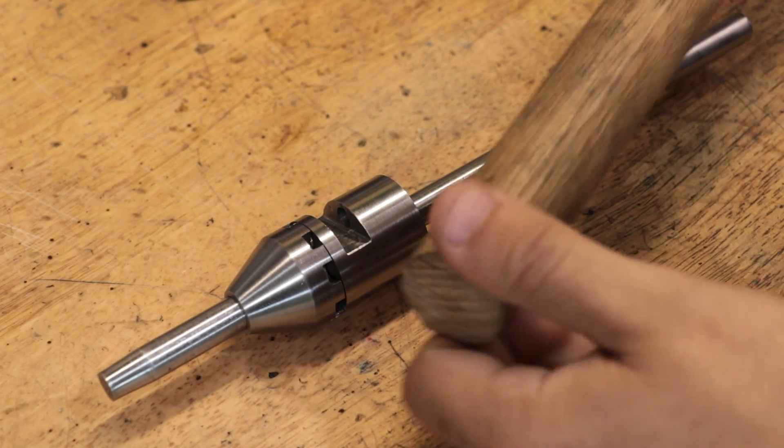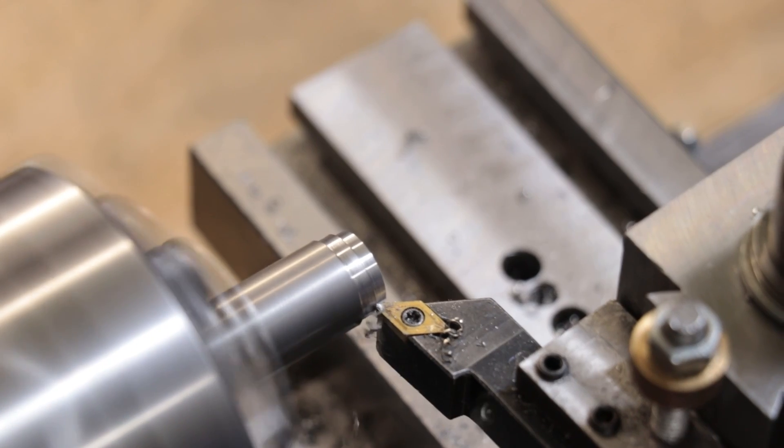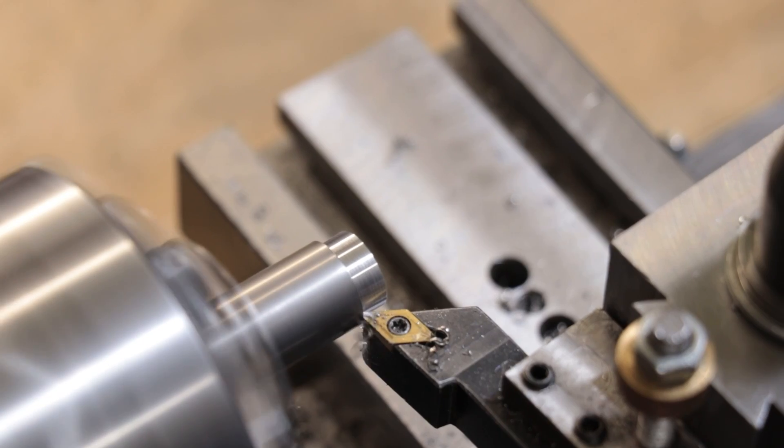Next I need a way of connecting a wooden handle to the screwdriver. What I decided on doing was making a shaft that I could weld to the back of the part.